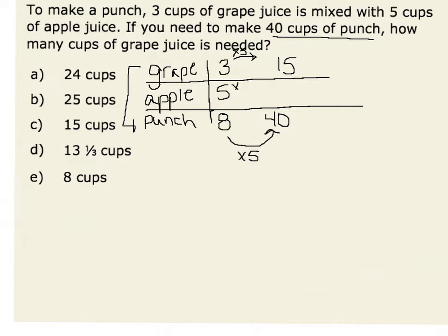Multiplying my part apple also by five, I would have a total of 25 cups apple. I would recognize that the ratio of 15 cups grape to 25 cups apple is equivalent to that ratio of three to five.